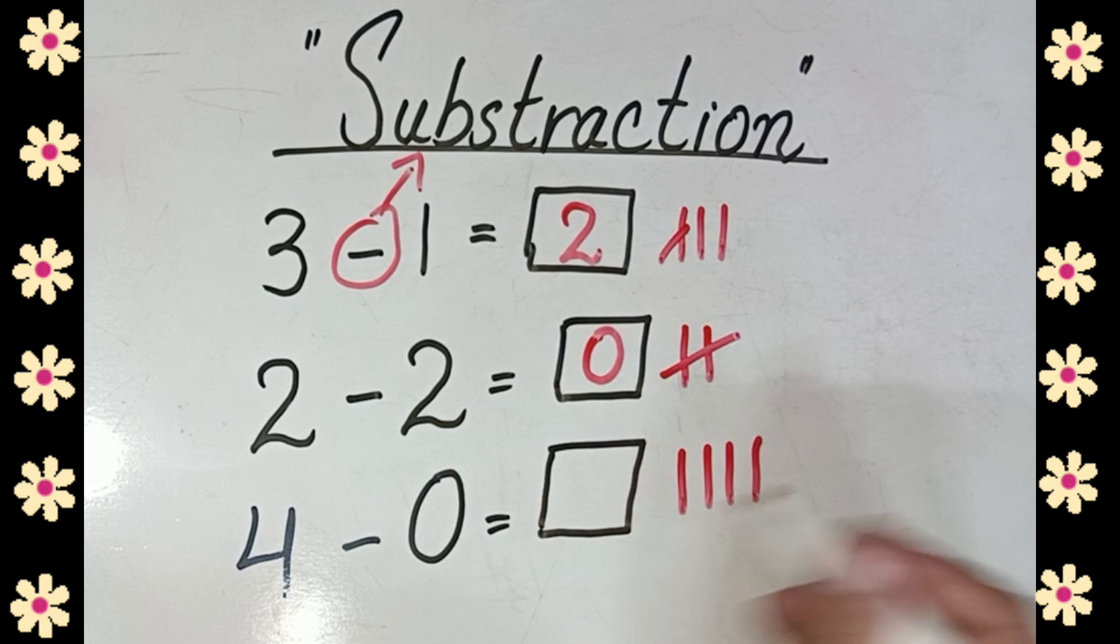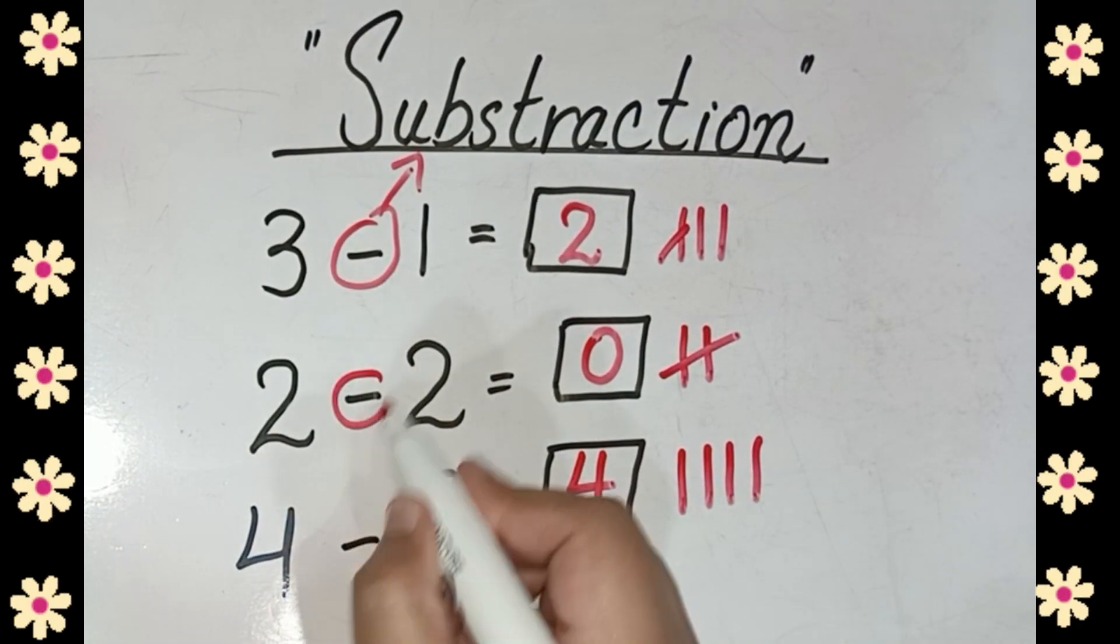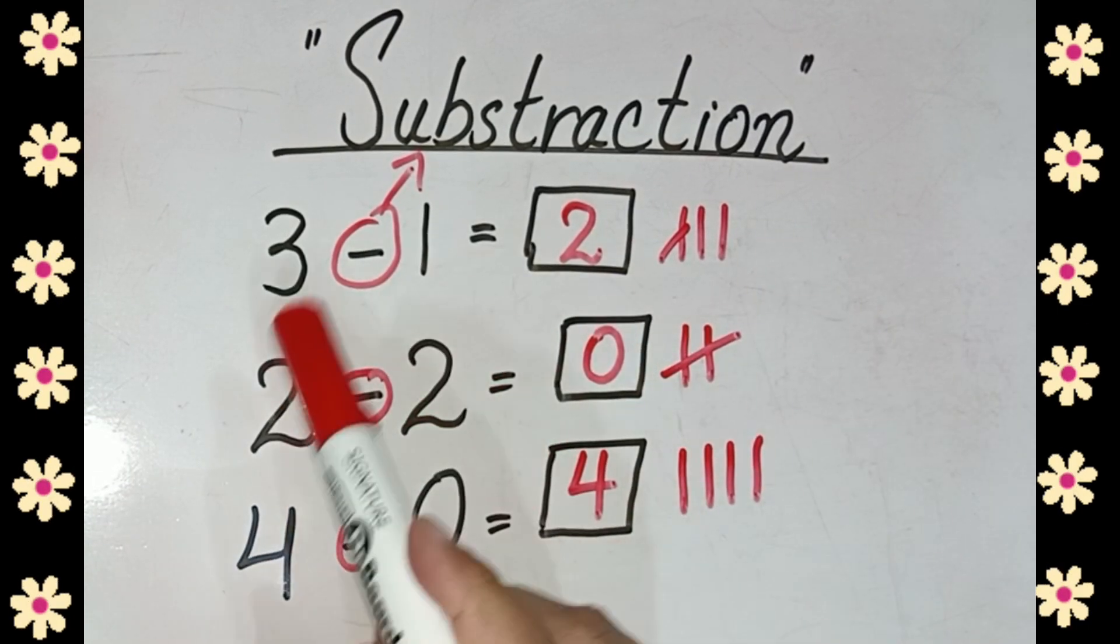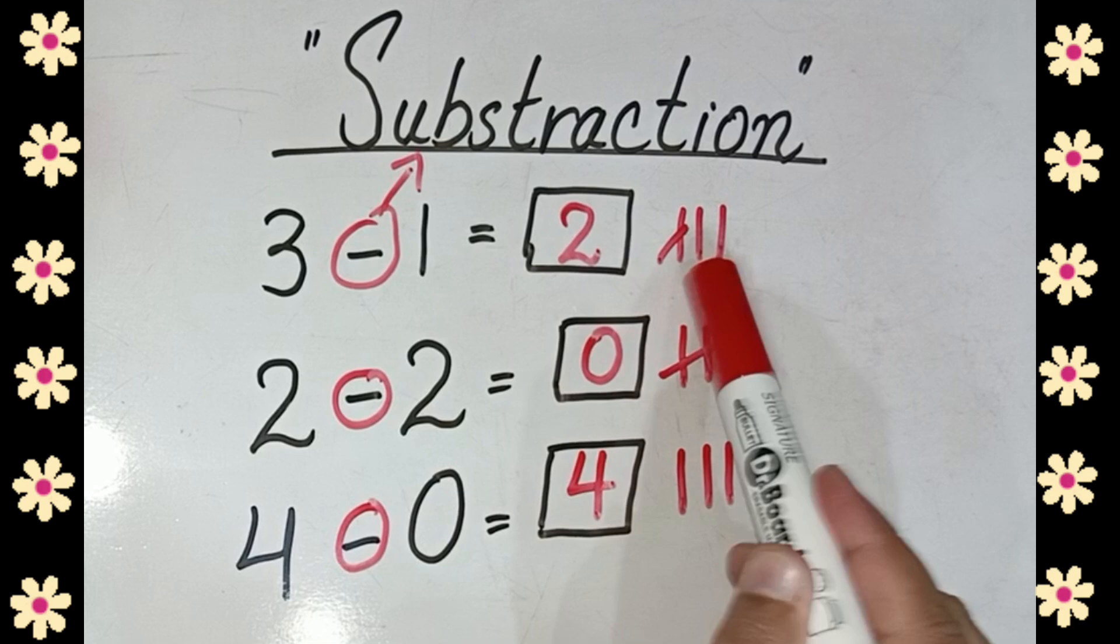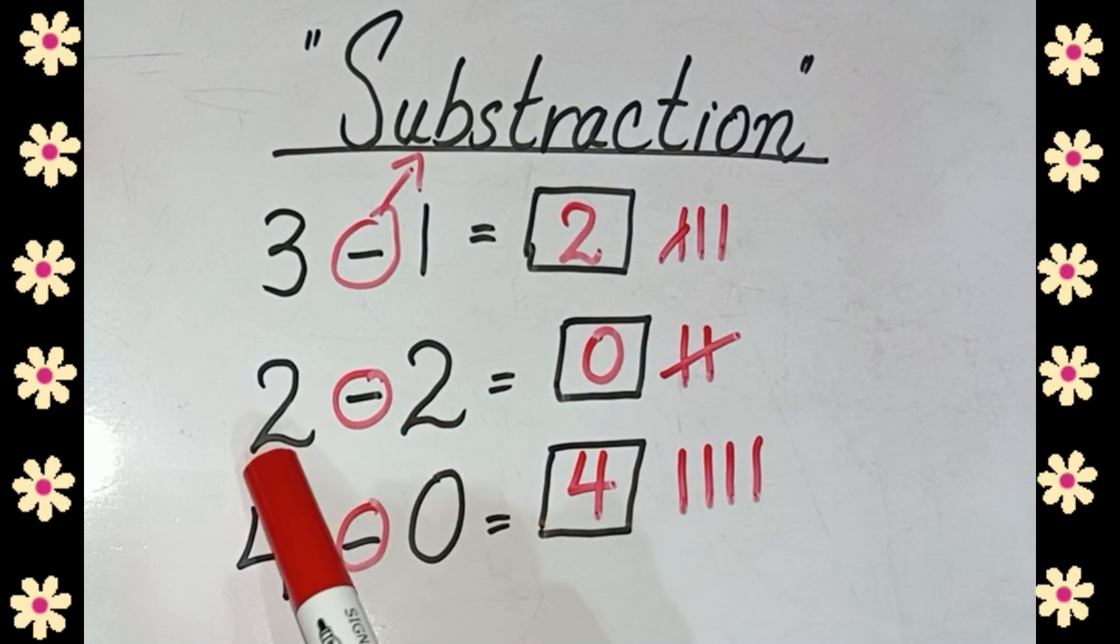is no number to minus, then we got 4. So this is subtraction, this is minus or subtraction sign. We have 3 minus 1 is equal to 2. This is 1, 2, 3 minus 1, then we got 2. 2...